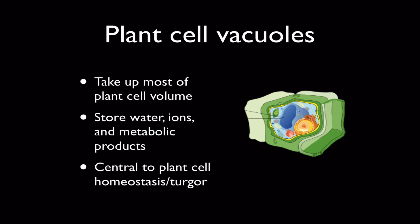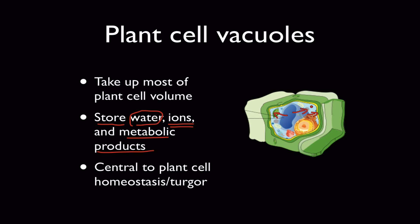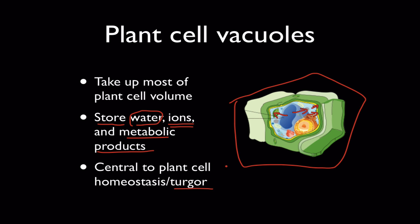Plant cell vacuoles are probably the most familiar type. The vacuole is likely the largest organelle inside a plant cell, drawn here in blue, taking up most of the cell's volume. Plant cells sometimes have more than one. They primarily store water, along with dissolved ions and metabolic products like sugars. They are central to plant cell homeostasis. Plant cells keep their vacuoles filled with liquid so the vacuole pushes against the cytoplasm, which pushes against the cell membrane, which pushes against the cell wall — keeping the cell tight and firm. This is called turgor pressure.